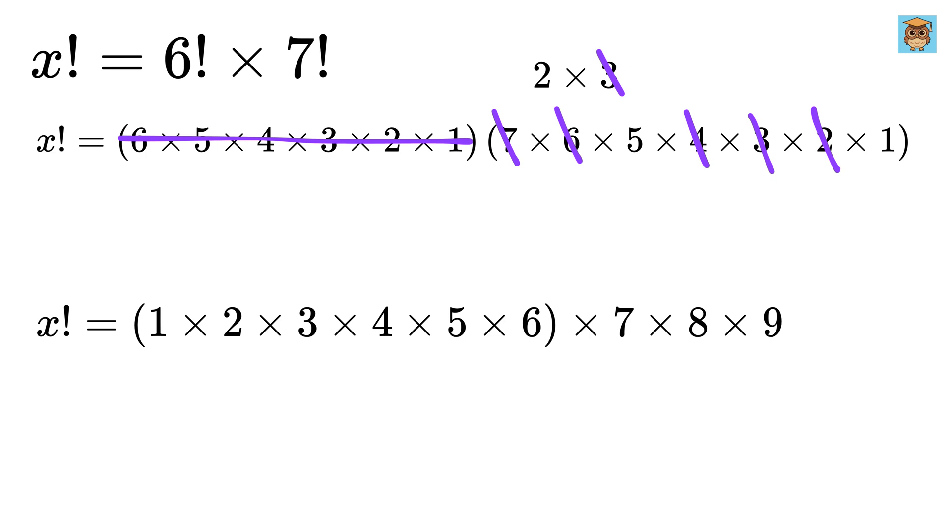Finally multiply the remaining numbers, this 5 and this 2, to get 10 and place it here, then cancel them. You can see that we have used all the numbers from this product.